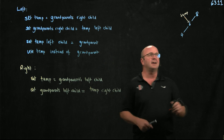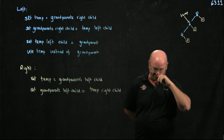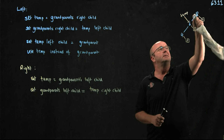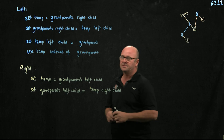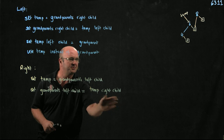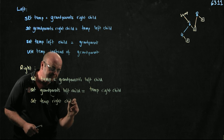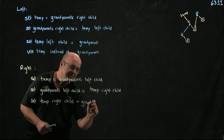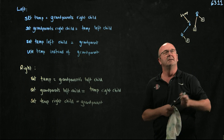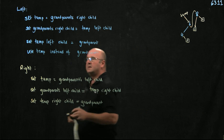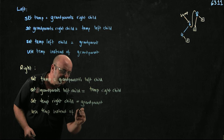Again we've got our x, our y, and our z. We take the grandparent's left child and point it to the temporary pointer's right child. Now that we've got something pointing to the temporary pointer's right child, we set the temporary pointer's right child equal to the grandparent. We take the 6's right child pointer, point that to the grandparent, and use temp instead of the grandparent.